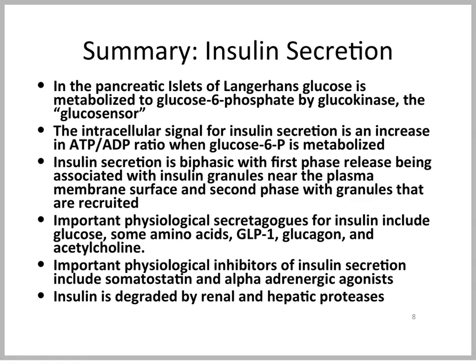Insulin secretion is biphasic, with first phase release being associated with insulin granules near the plasma membrane, and second phase with granules that are recruited from the interior of the cell. Important physiological secretagogues for insulin include glucose and some amino acids, intestinal hormones like glucagon-like peptide 1, glucagon, and acetylcholine, but only when glucose in the blood is normal. Important physiological inhibitors of insulin secretion include somatostatin, alpha-adrenergic agonists, and beta-adrenergic antagonists. Insulin is degraded by proteases in the kidney and in the liver.